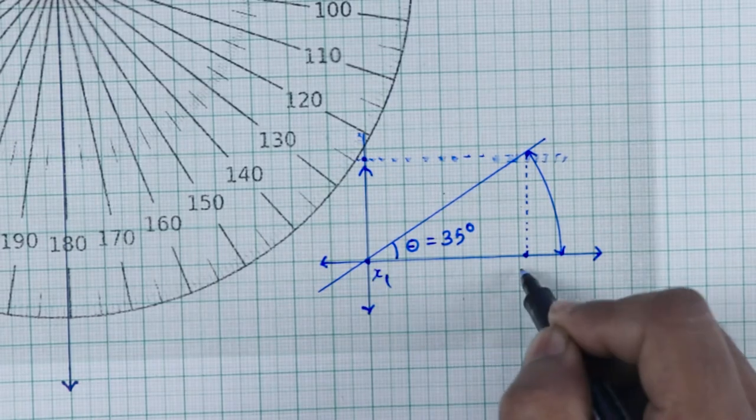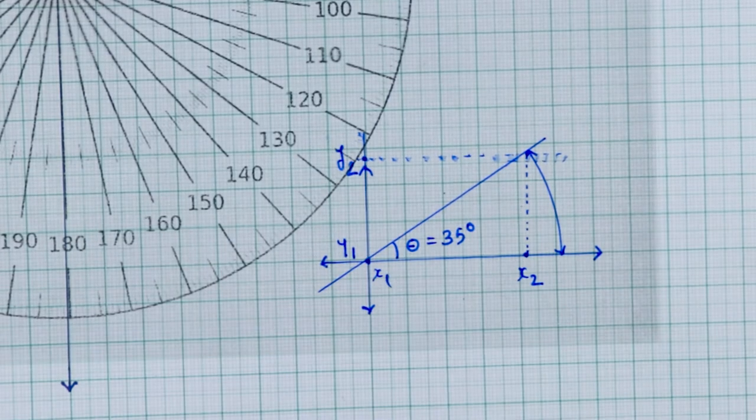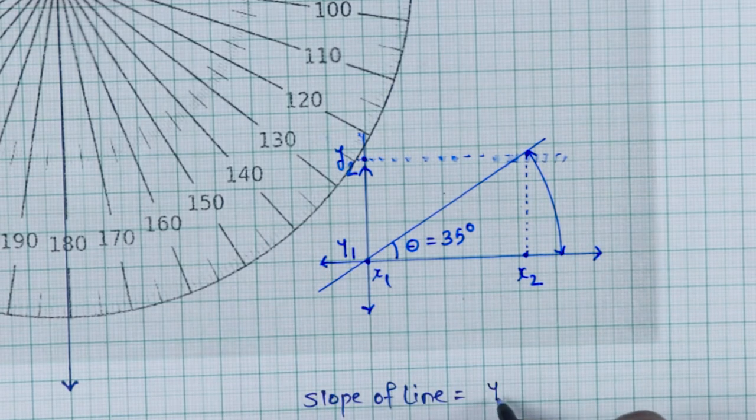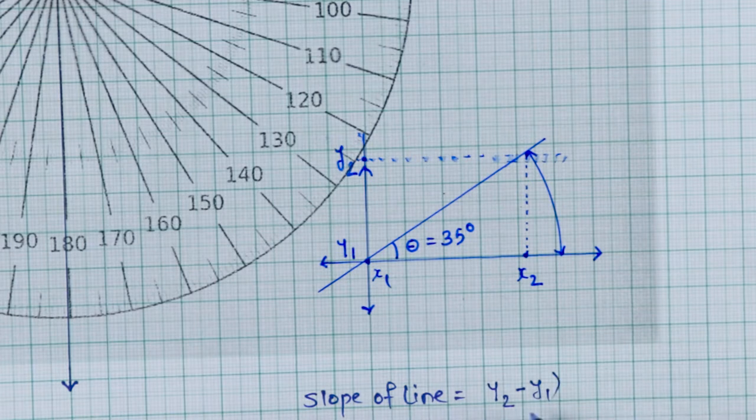Set the hour hand and minute hand of the clock at different positions so that they are perpendicular to each other. Measure the slope of the two lines and verify it by the formula of the slope. Do the same using some more sets of perpendicular lines.